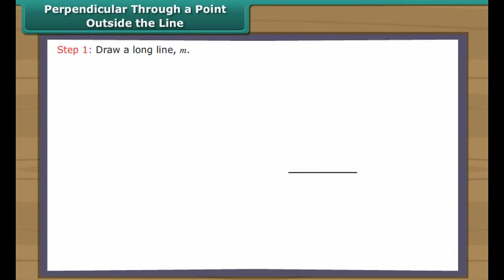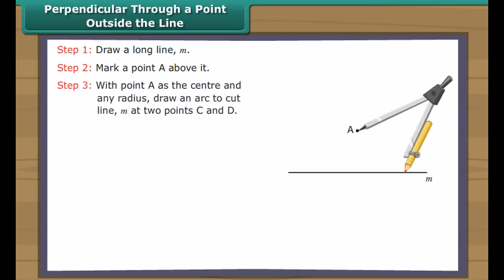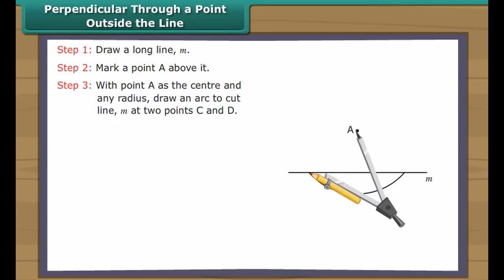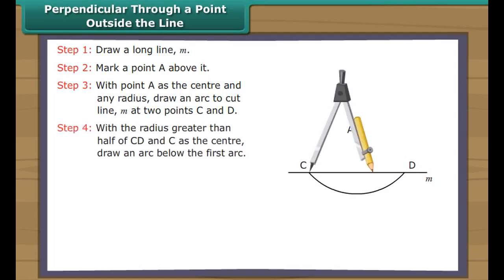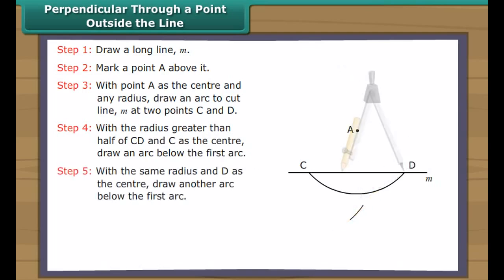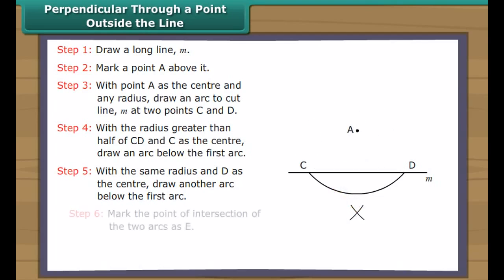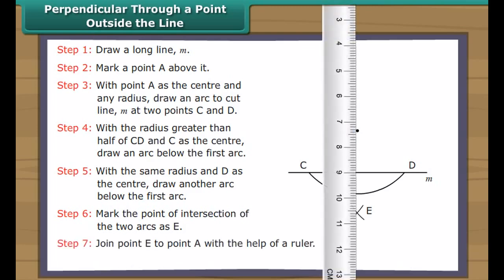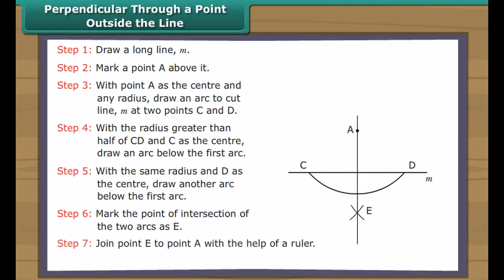Perpendicular through a point outside the line. Draw a long line M and mark a point A above it. With point A as the centre and any radius, draw an arc to cut line M at two points C and D. With a radius greater than half of CD and C as the centre, draw an arc below the first arc. With the same radius and D as the centre, draw another arc below. Mark the point of intersection of the two arcs as E. Join E to A. AE is perpendicular to line M.